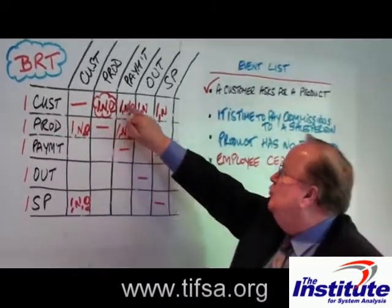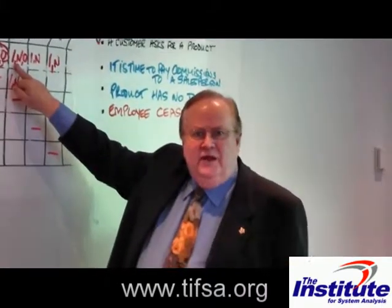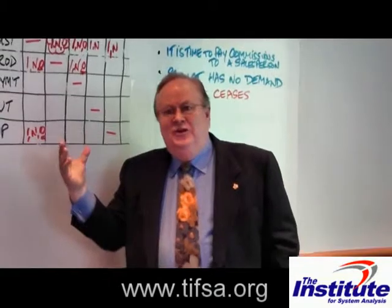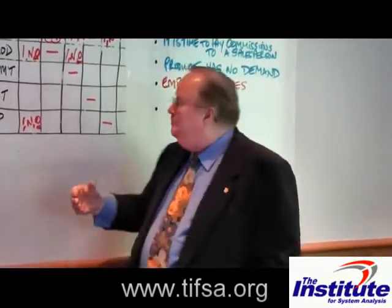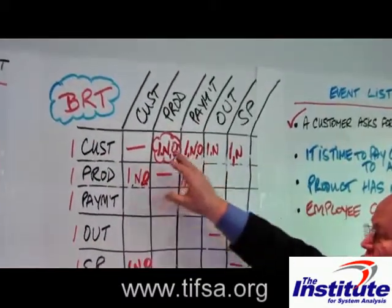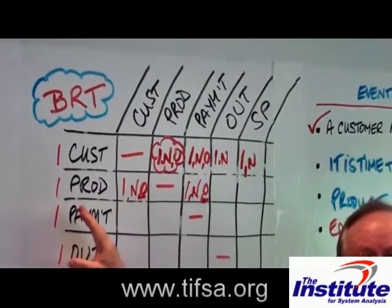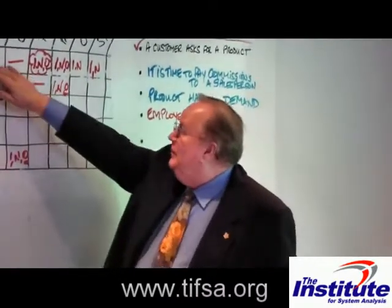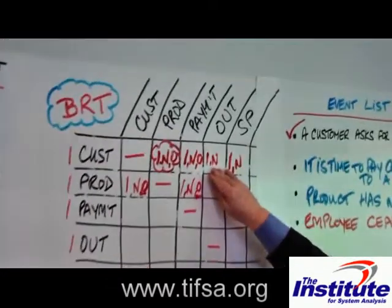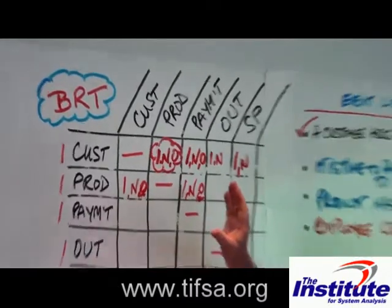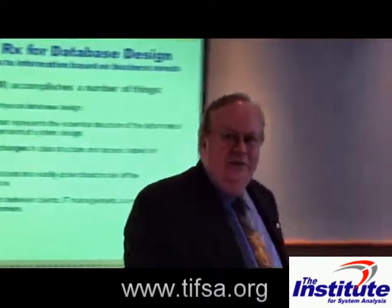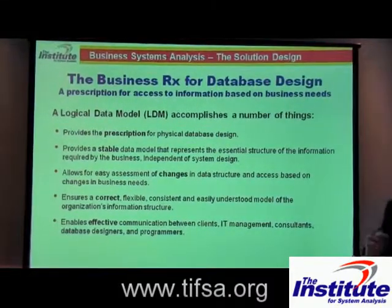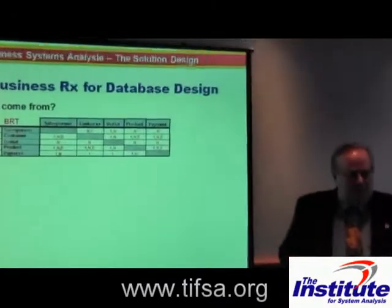There's a requirement to join the customer record with all the payment records — it could be one payment record for that customer, several payment records, or possibly no payment record at all. So this table tells us that regardless of how the database is designed, we have to be able to find the payment records for an individual customer. We also have to be able to find the outlets where they may have been shopping. This becomes in effect a data model stating these are the things we have to be able to retrieve.